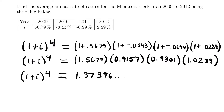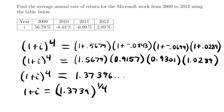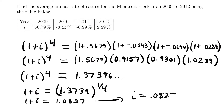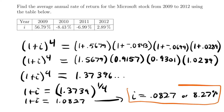Then we just take the fourth root of each side. So (1 + i) = 1.3739 to the one-fourth power, which is the same as taking the fourth root. We find that (1 + i) = 1.0827. Subtracting one from each side gives us i = 0.0827, or 8.27%. That is our average annual rate of return for this four-year period for this Microsoft stock.